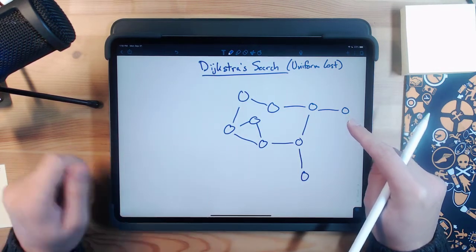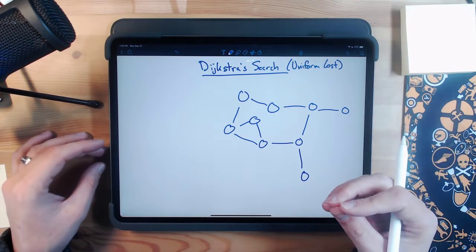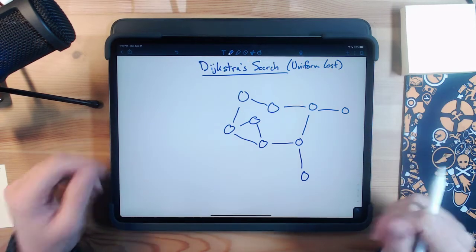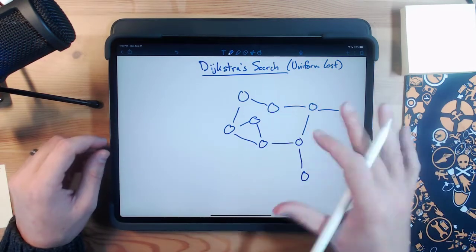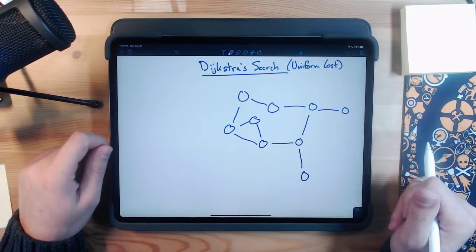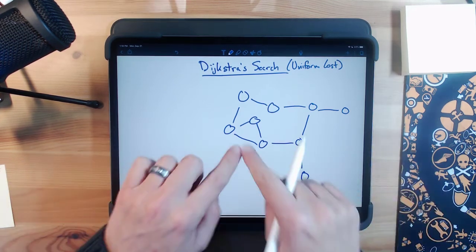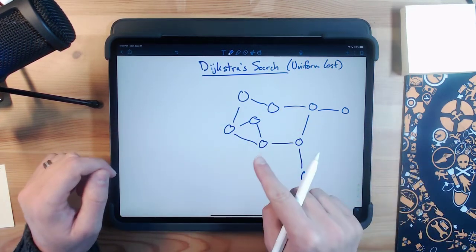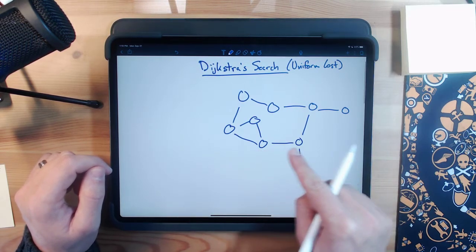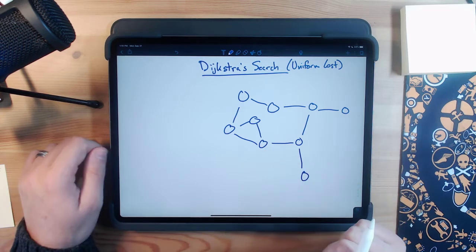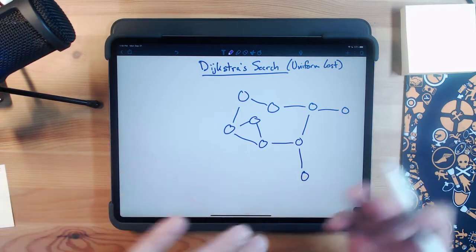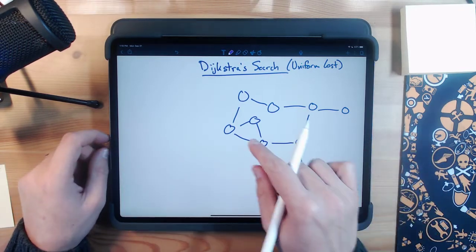With Dijkstra's search, it gives us the added benefit of allowing us to add weights to each of our edges or potentially to each of our nodes, depending on how the data in your game or simulation is established. This can be frequently used for something like airline travel. So imagine that these are all different cities and that it actually takes different amounts of time to travel between one node and another over an edge. Dijkstra's search allows us to consider those values, those connection weights as they're commonly called, with each of those edges.